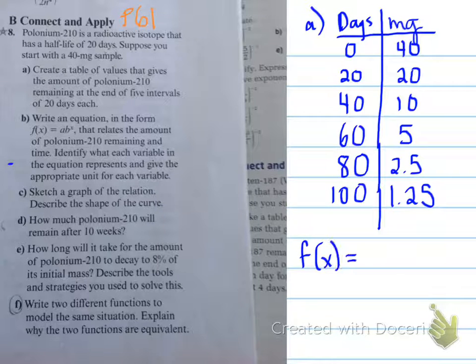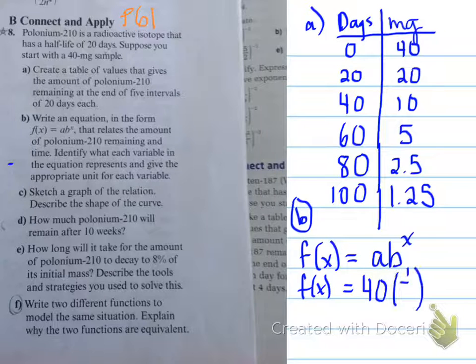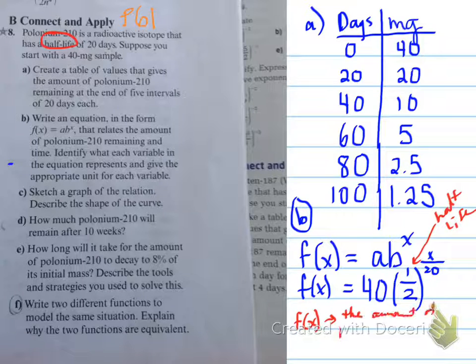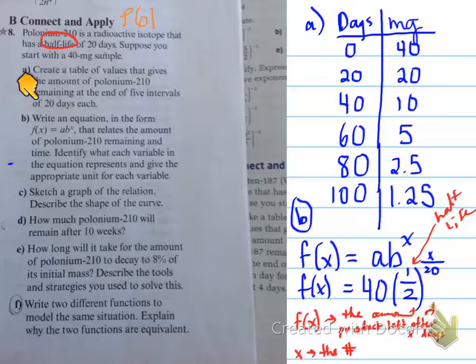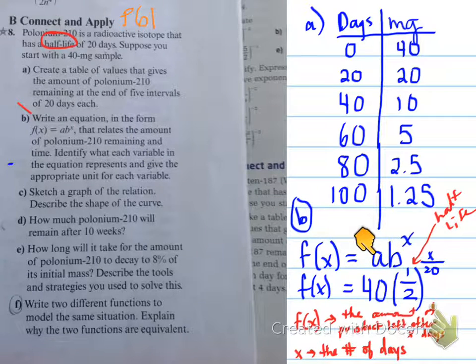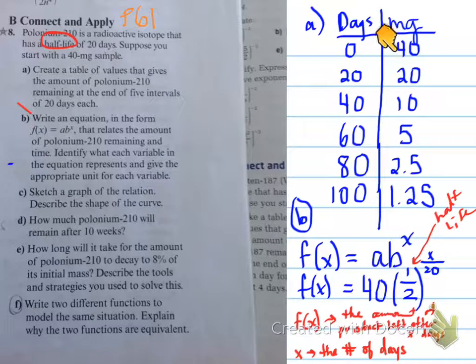from your workbook or your homework about polonium 210, and basically questions about how to set up the table. So here's a table, and it asks you to write an equation. How do we get that equation? So the first part, part A says, create a table of values that gives the amount of polonium 210 remaining at the end of five intervals of 20 days each. So we go each 20 days, and what happens is it goes half of its lifespan in every 20 days. Now, F of X is equal to A times B to the X. We need to find out what everything means here. A turns out to be 40. Why is it 40? Well, we started originally with 40.